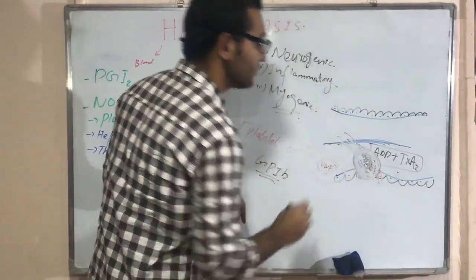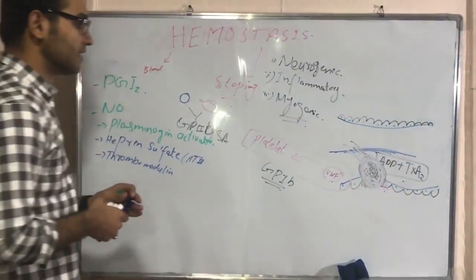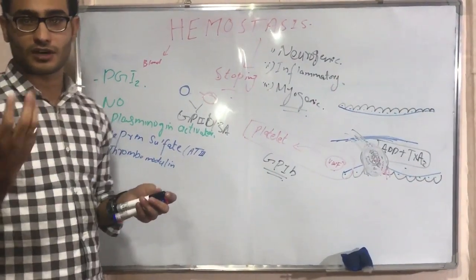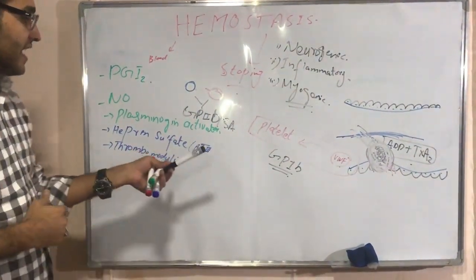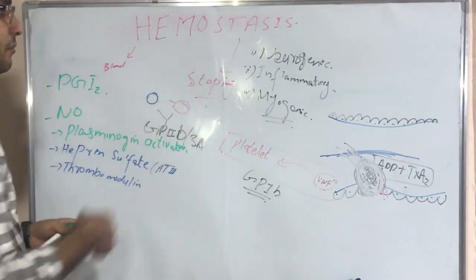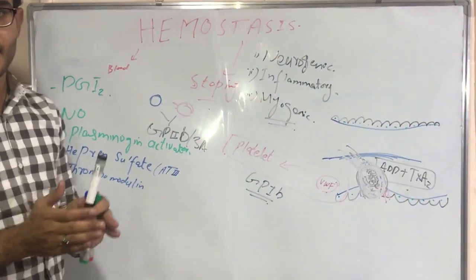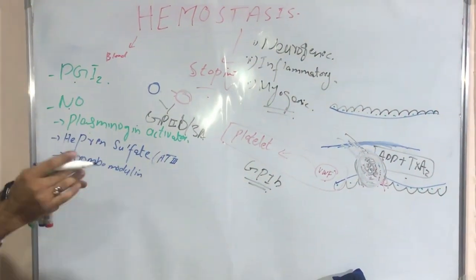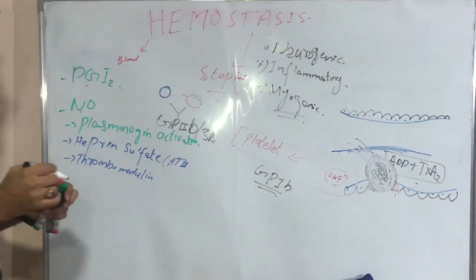This protein GP2B3A causes platelet-to-platelet adhesion. When more platelets come to the injured site, a plug is formed. This formation of the plug occurs at the site of the injured blood vessel. This platelet plug is weak, and for a firm thrombus, a cascade of clotting factor mechanisms must be activated.